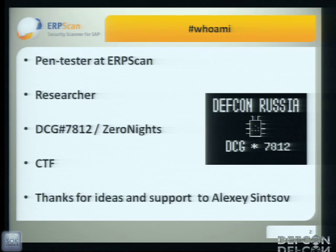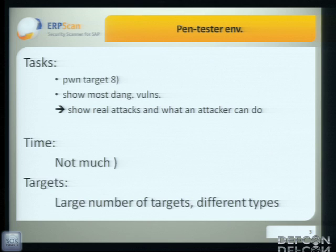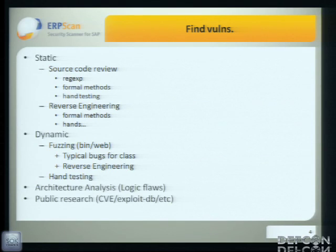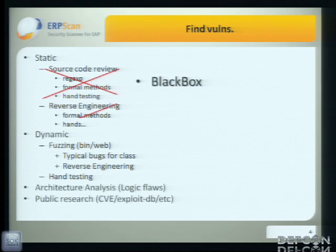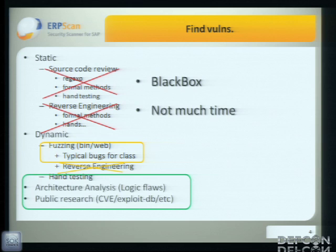Before talking about VMware, I'd like to talk about penetration testing in general. The main goal of pentest is to show weak elements in infrastructure — how to hack the system, why we can hack it, and how we can hack it. We usually have a large number of targets of different types and unfortunately not much time. So we can't use all bug-hunting methods like source code review, because it requires a lot of time and reverse engineering. We could use a little fuzzing if we have a binary, but usually we rely on logic — looking for logic flaws and searching bugs in public research.